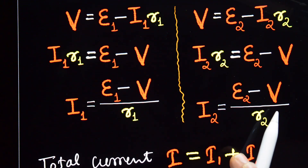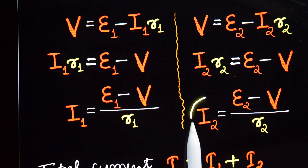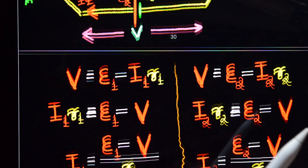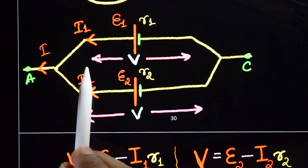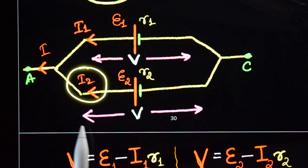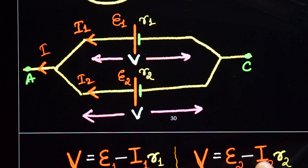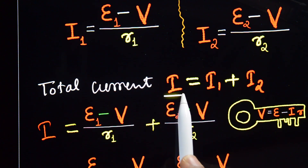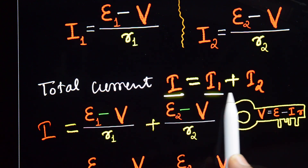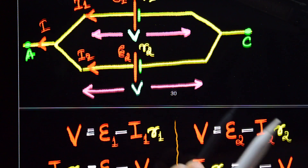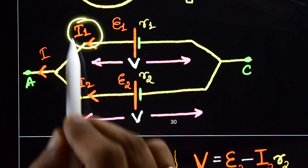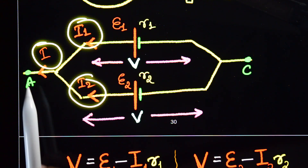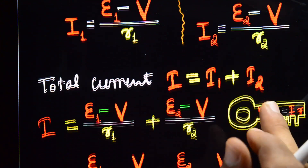Similarly, the current through the second cell is i2 = (e2 - v) / r2. The total current in the circuit is i = i1 + i2.